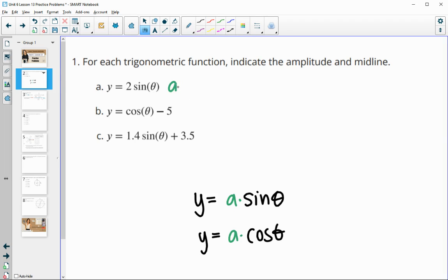In this one, the amplitude is two. So two times the sine function. In part b, there isn't a number showing here. It's really a one, since one times cosine would be the same as just cosine. So the amplitude is one. And in c, it would be 1.4.